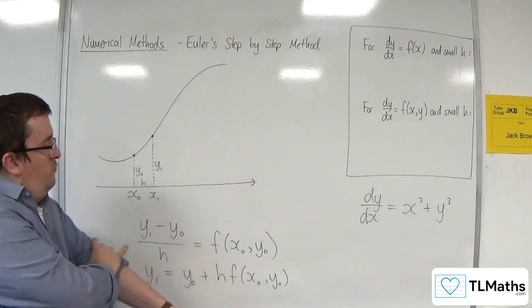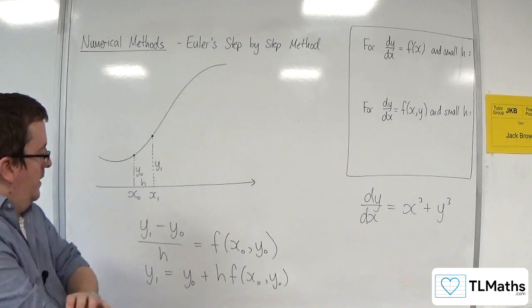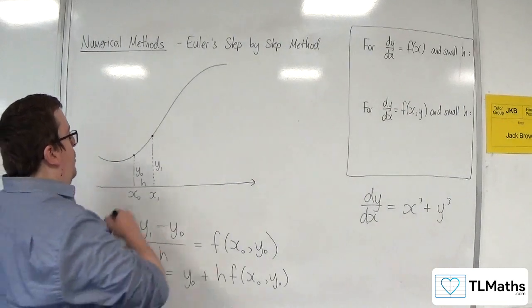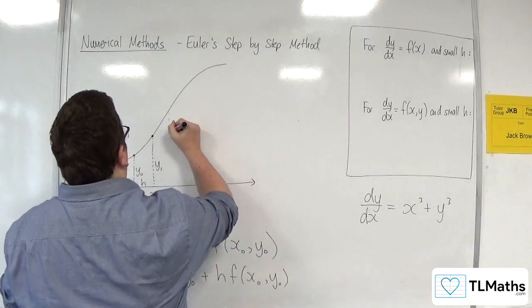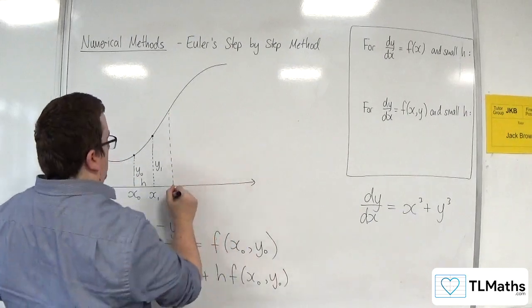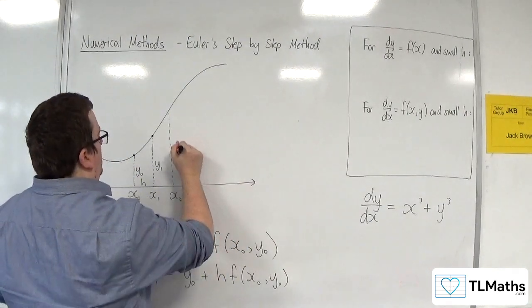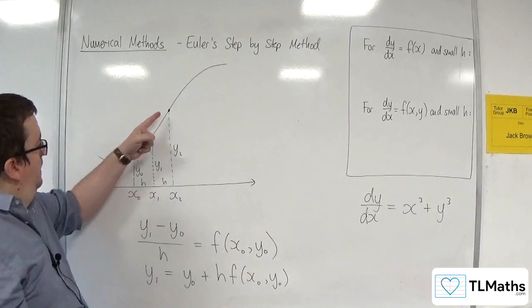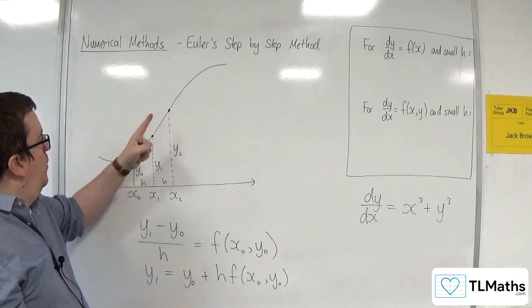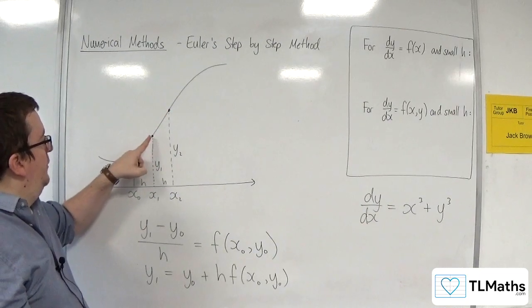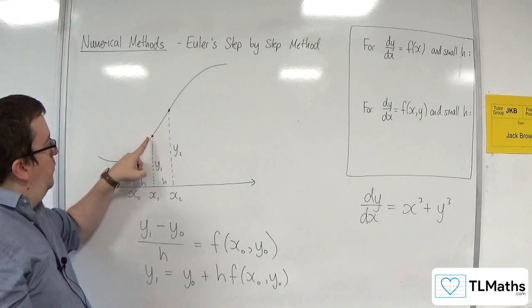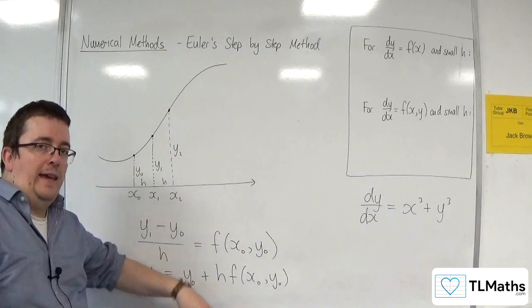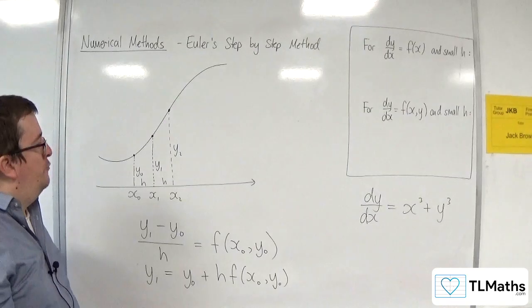Now, if we want to generalise this, then what I'm saying here is that then I can work out the next point along. So, this point, by saying, well, y2 should be equal to y1 plus h lots of f of x1 y1. Okay? And I could keep on going over and over and over again.